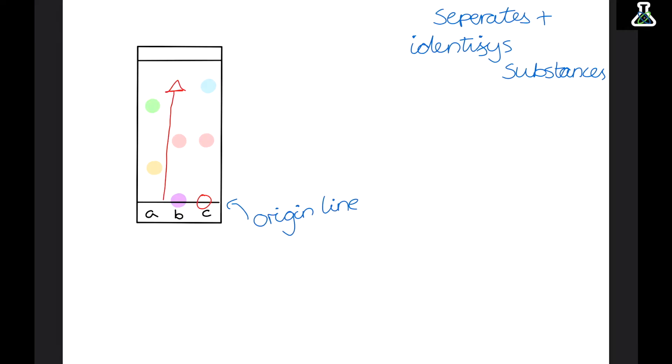When it is dissolved in the solvent we call this the mobile phase. And then when it is stuck to the paper and not moving it is called the stationary phase. So the solvent keeps moving up the paper until we get to the top and then we draw another line. And this is called the solvent front. And this is basically just our indication of where the solvent reached to on the paper. Now it's really important that these lines are drawn in pencil so that they don't dissolve in the solvent just like the mixture.